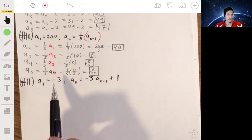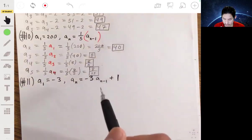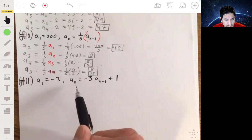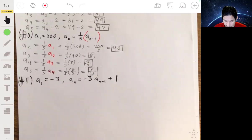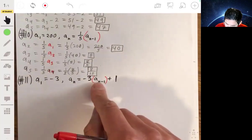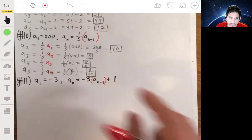All right, now let's look at number 11. Okay, see, now this is where we get a little more advanced. a1 is negative 3, and an is negative 3 times a(n-1), or negative 3 times the previous term. Then you add 1 to it.